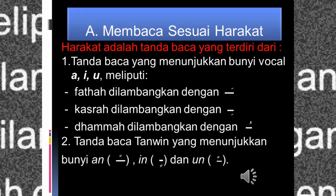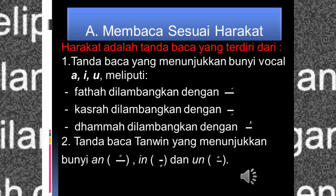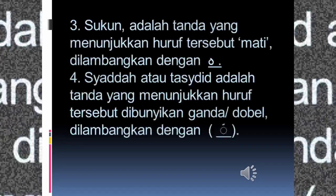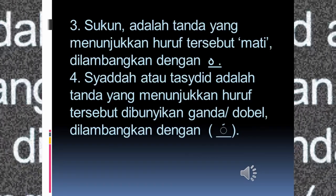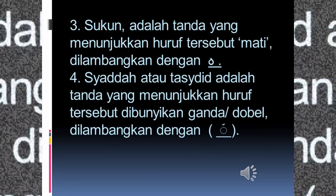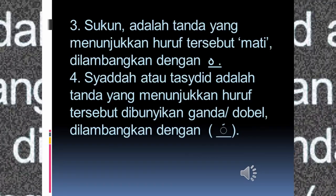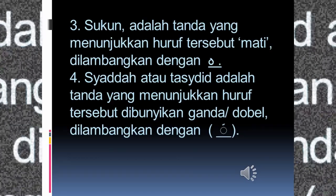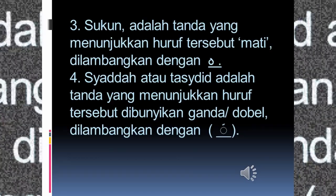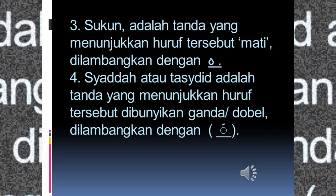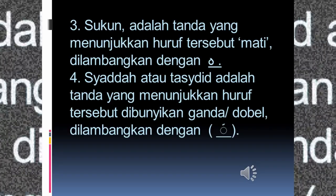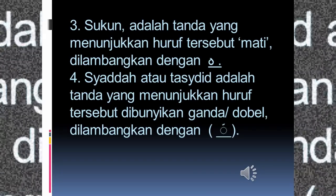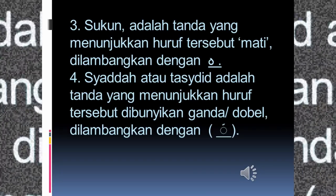Yang kedua, tanda baca tanwin yang menunjukkan bunyi an, in, dan un. Yang ketiga adalah sukun, yaitu tanda yang menunjukkan huruf tersebut mati, dilambangkan seperti bulatan kecil di atas. Keempat, syaddah atau tasydid, yaitu tanda yang menunjukkan huruf tersebut dibunyikan ganda atau dobel, dilambangkan seperti angka tiga di atas.